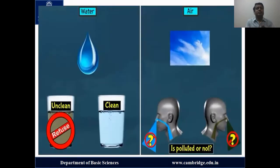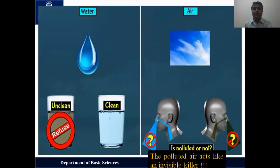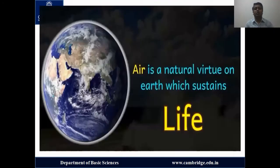When it comes to water, you can see just by looking at it whether it is clean or unclean, and take a decision to refuse or accept it. But when it comes to air, you cannot distinguish which is good air and which is bad air. You cannot say 'I will breathe only good air.' It is not in our control. The polluted air spreads everywhere and acts as an invisible silent killer — without our knowledge. Hence there is a need to keep our ambience free from pollutants.